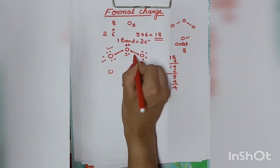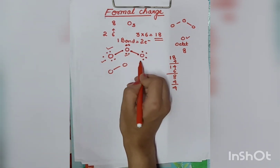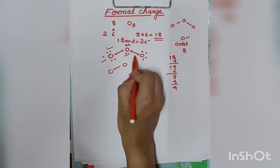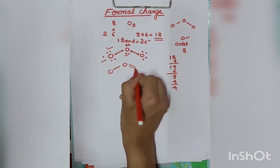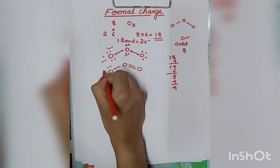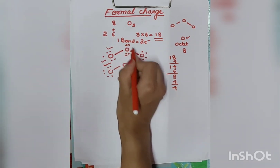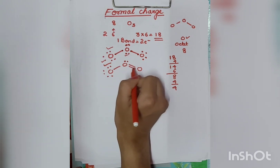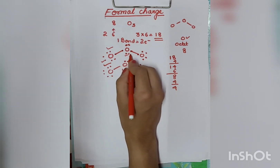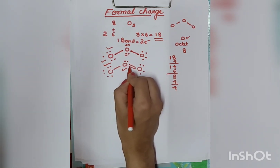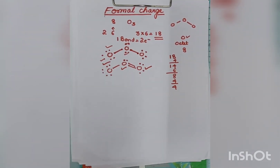We need to make a double bond. We take a lone pair and move it into bonding. This converts a single bond to a double bond. Counting now: 1, 2, 3, 4, 5, 6, 7, 8 — octet is complete! The lone pair, the single bond, and the double bond arrangement gives: 1, 2, 3, 4, 5, 6, 7, 8 — octet complete for that atom too. And for the third: 1, 2, 3, 4 — plus the bond electrons — 1, 2, 3, 4, 5, 6, 7, 8 — octet complete. This is our Lewis dot structure.